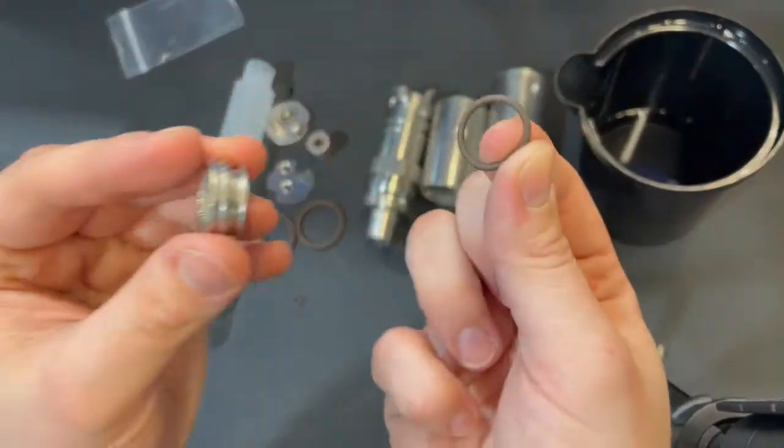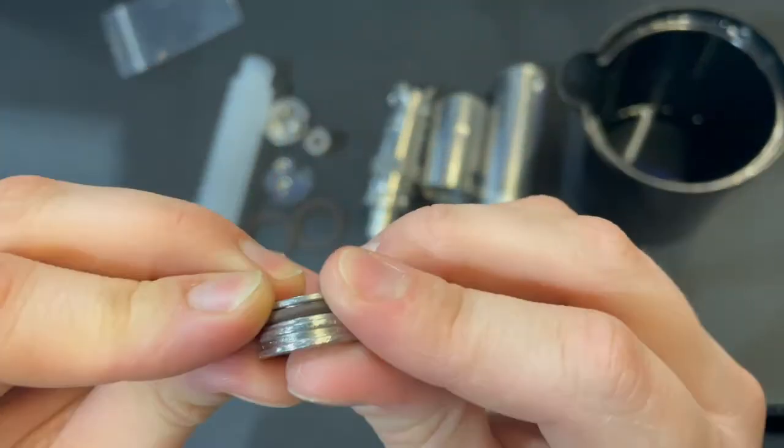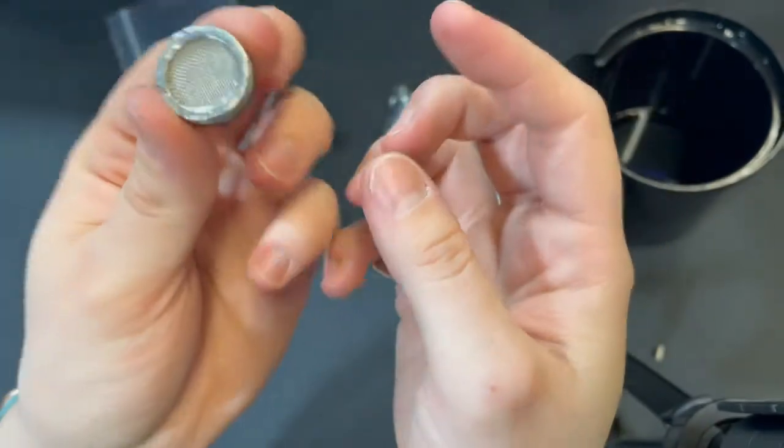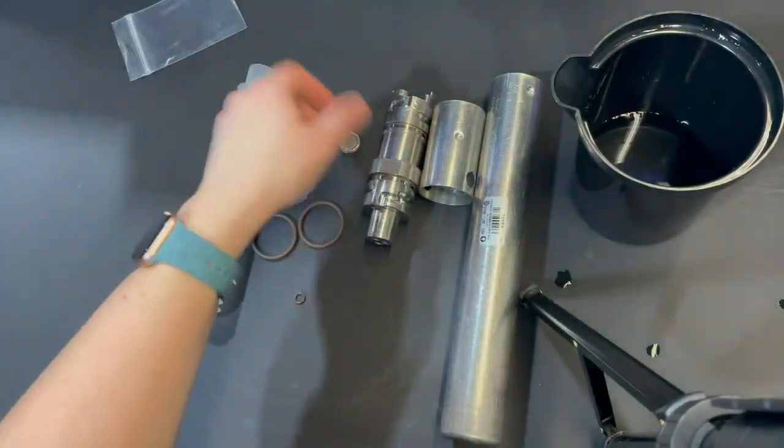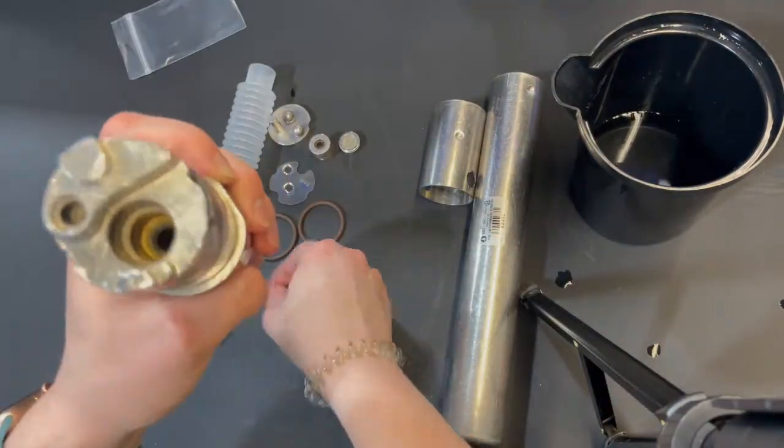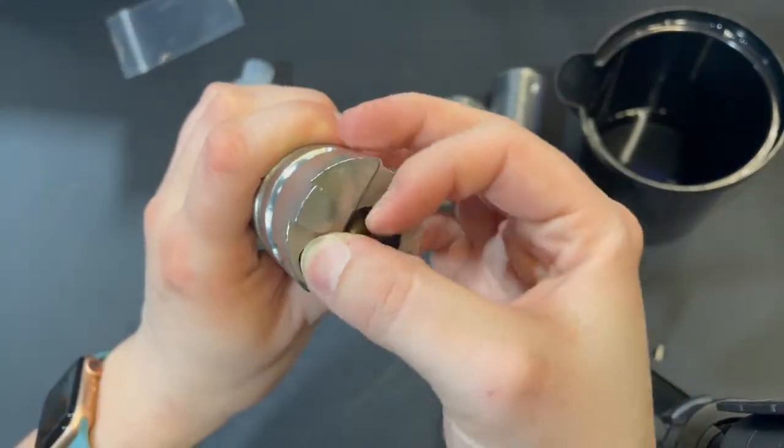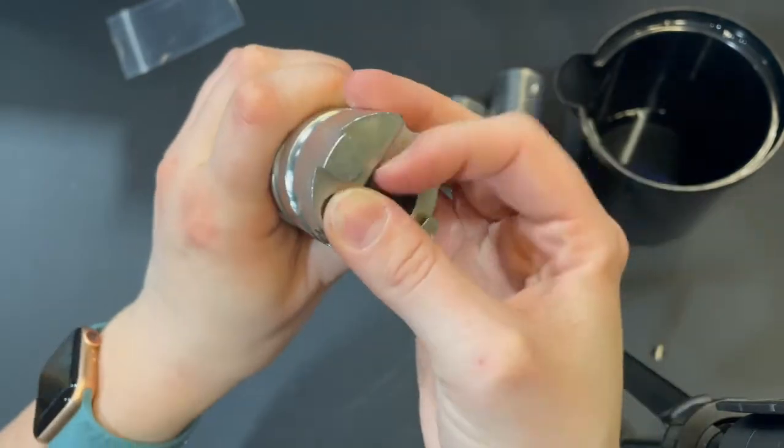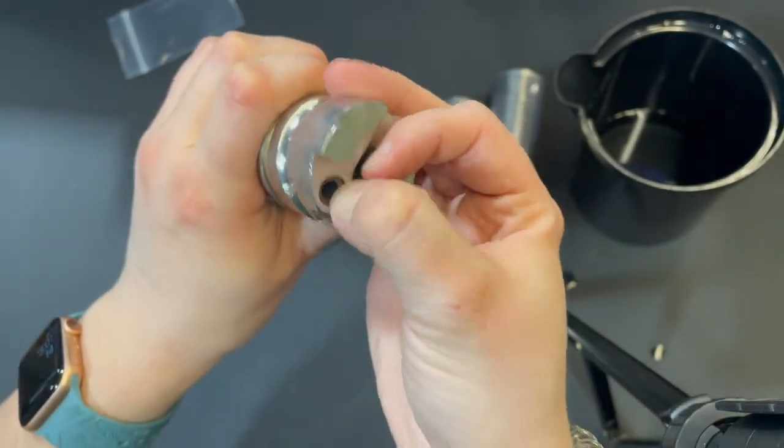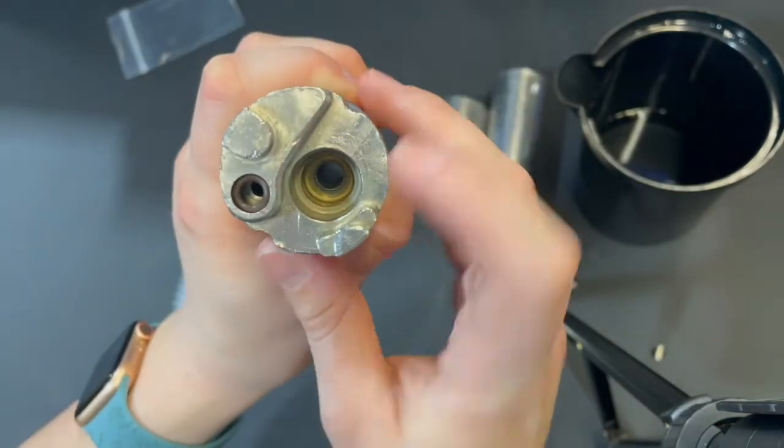Then we're going to take a medium o-ring and stick that into the outside groove of this piece. Then we're going to put this small o-ring into the top in this small hole until it sits flush. Make sure that it's not bent or crimped in there.